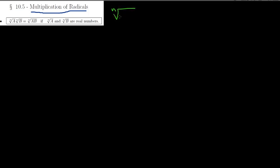We're going to start section 10.5. In 10.4, we were adding and subtracting radicals. Now we're going to be multiplying. Earlier we had this relation: if you have the nth root of a times b, because it's a product, you are allowed to break it apart as the product of the two nth roots. And we did that a lot in the previous section.